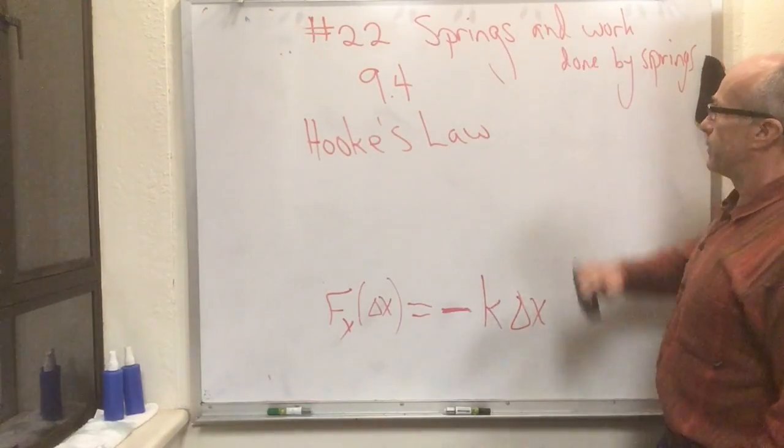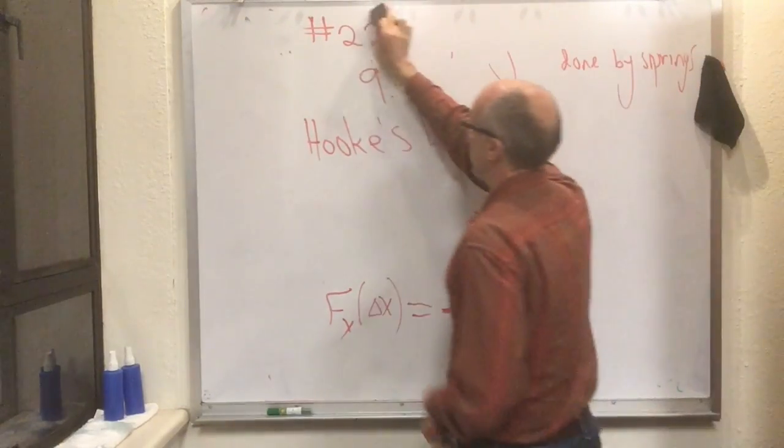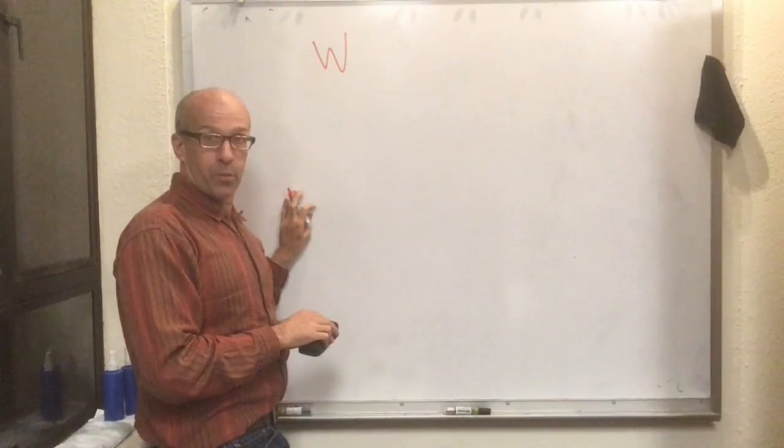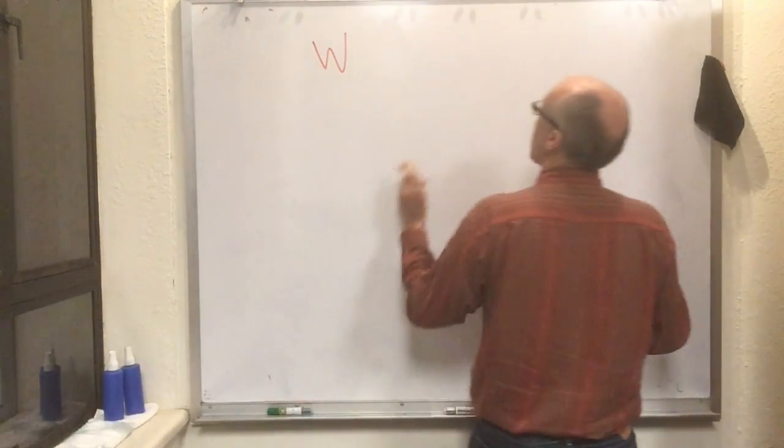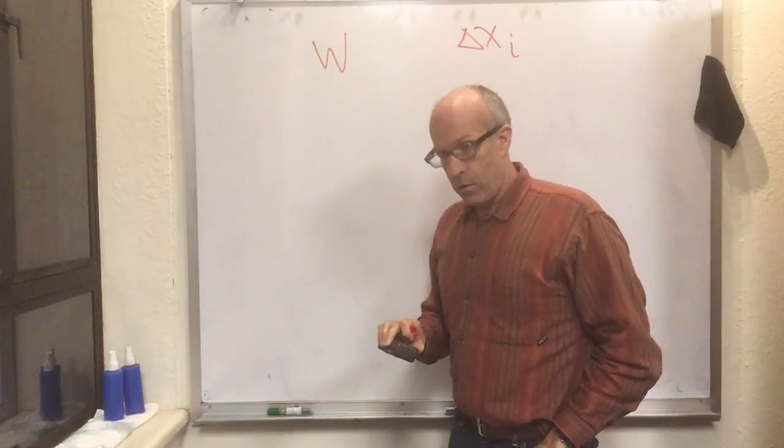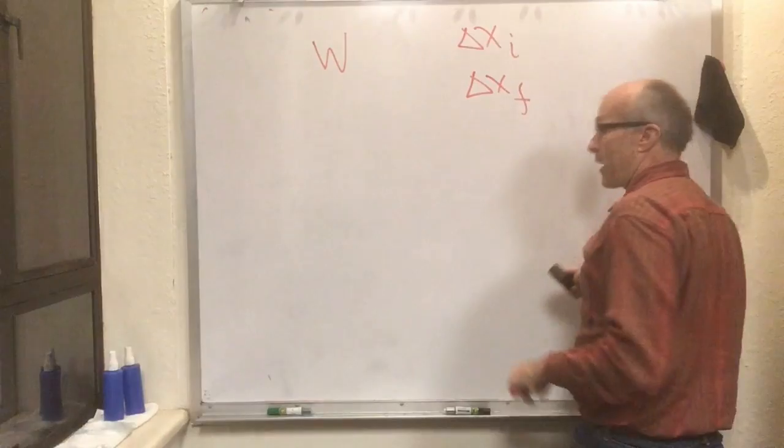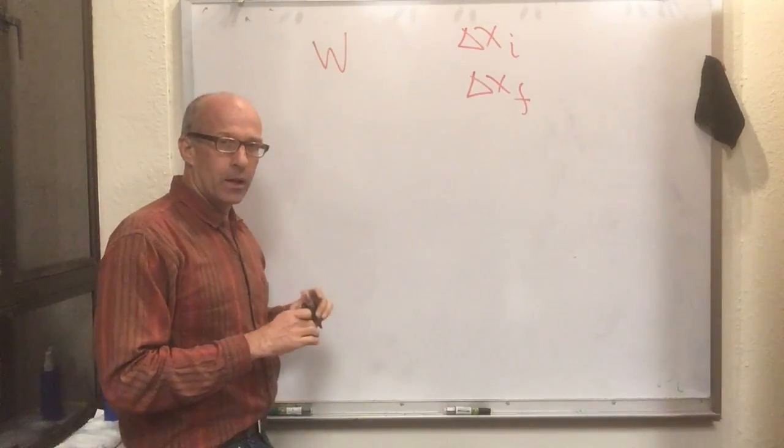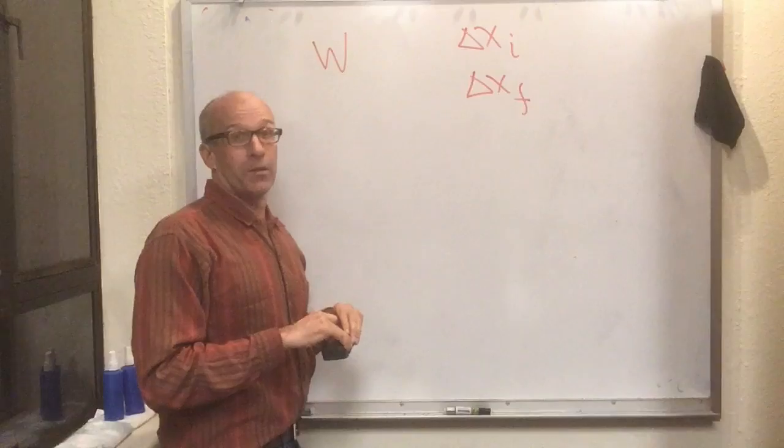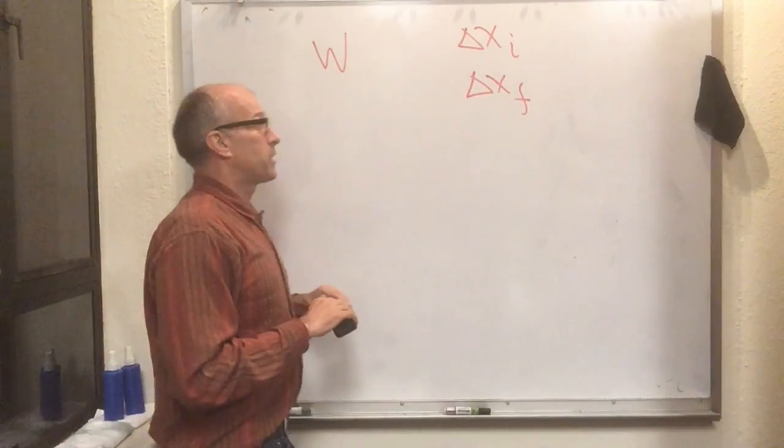So that's springs. Work done by springs is the one remaining thing I want to do. Here's the question: What is the work done by a spring as it goes from an amount delta x initial relative to its rest position to an amount delta x final? Let's make our lives easier: let's measure the position of the spring from its rest, unstretched or uncompressed, natural position.